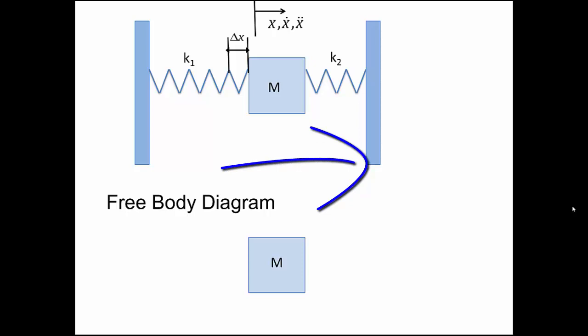The force from the left spring is going to be k1 times delta x to the left. We can do the same analysis to the right spring. Since the right spring is shortened by delta x, it has the tendency to go back to its original length by pushing the mass to the left.